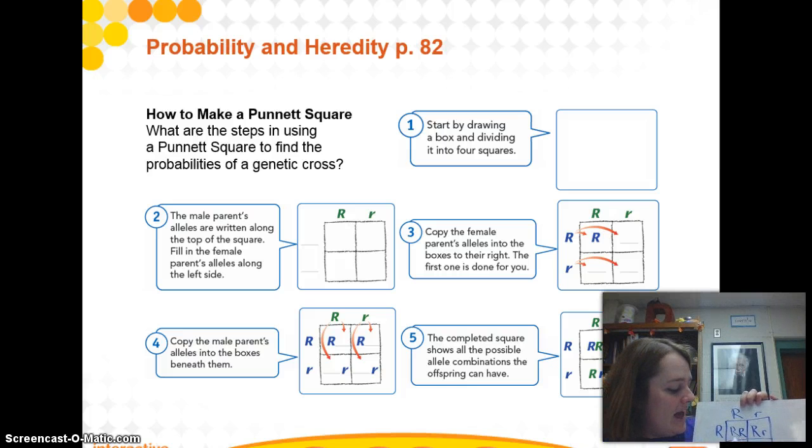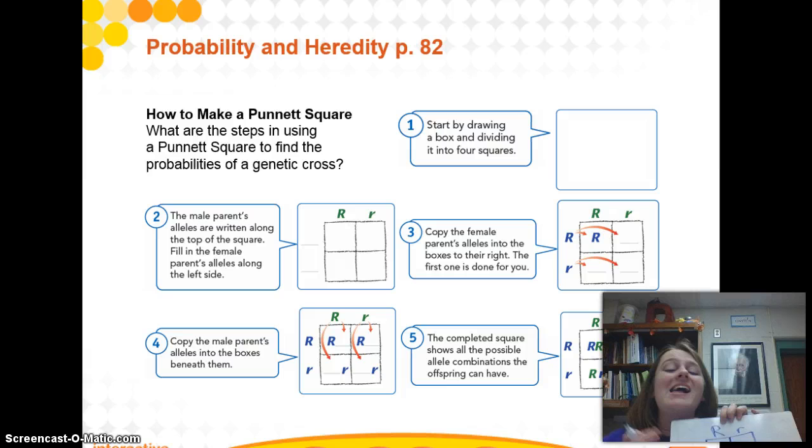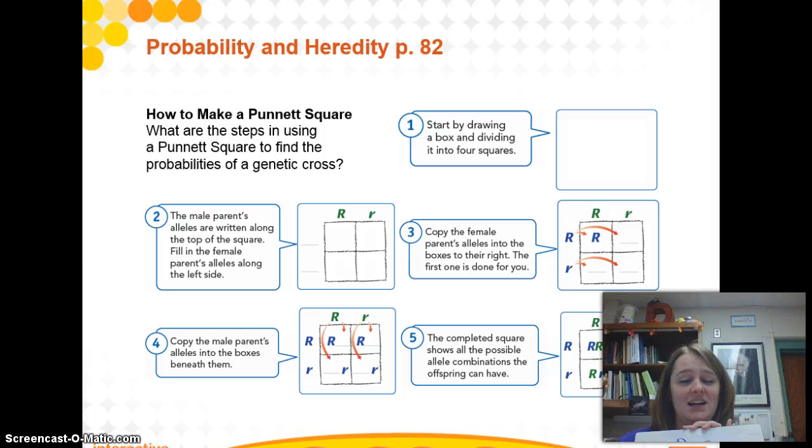Anytime there's that capital letter, anytime there's a capital letter in the box, it's going to look like the dominant trait. So in our eye color analogy, anytime there's a capital R, it's going to look like a brown-eyed offspring. Anytime there's not a capital letter, it's going to look like whatever the recessive trait is.